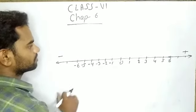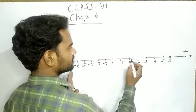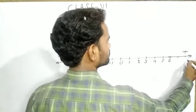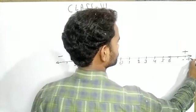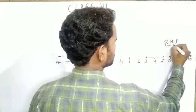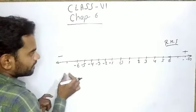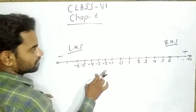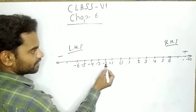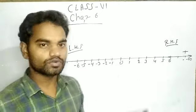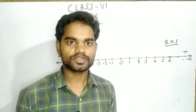Now let's discuss the number line. This is the number line. In this number line, numbers 1, 2, 3, 4, 5, 6, 7 and so on up to infinite go in the positive direction, that is the right-hand side. In the negative direction, that is the left-hand side, we have minus 1, minus 2, minus 3, minus 4, minus 5, minus 6. All these numbers are integers represented on the number line.